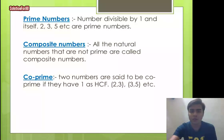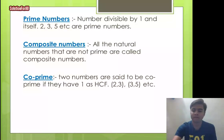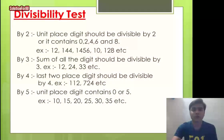Composite numbers are all natural numbers that are not prime. Examples include 4, 6, 8, and so on.